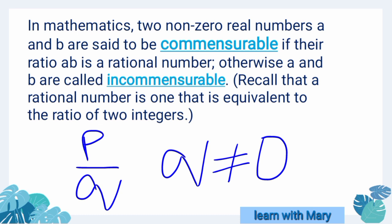If we get the common ratio of two numbers is a rational number, then we can say this is a commensurable number. If the common ratio between A and B is not a rational number, then we can say this is an incommensurable number.